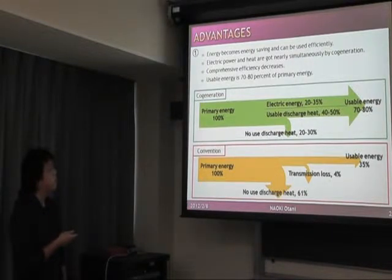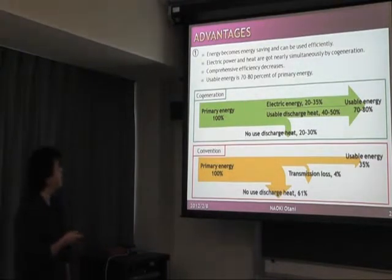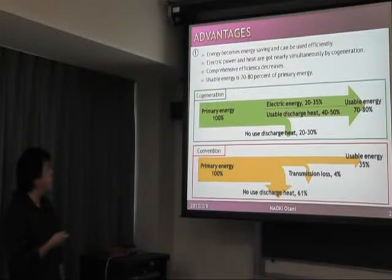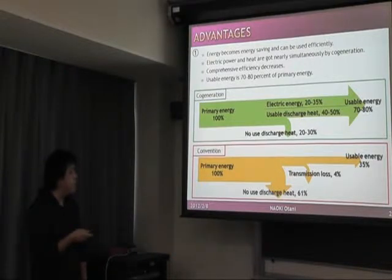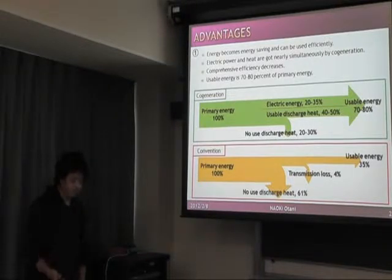Using 20 to 30% less primary energy in conversion, the conventional method is 61%, achieving over 4% less energy consumption.